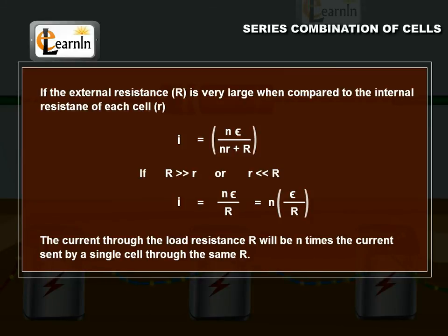So, the current through the load resistance R will be n times the current sent by a single cell through the same R.